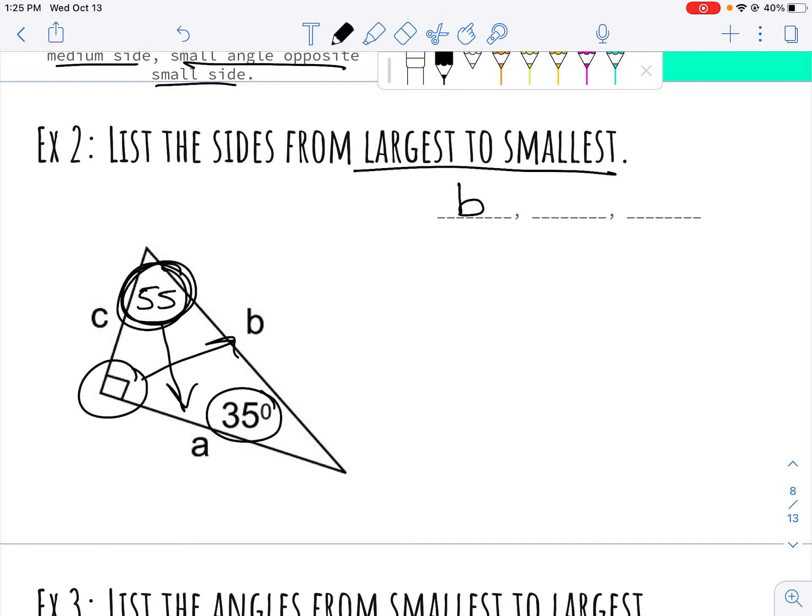My second biggest angle is 55, across from that is A, and then my smallest is C.